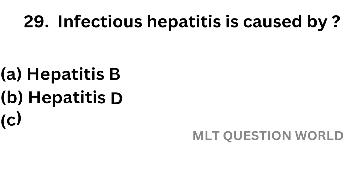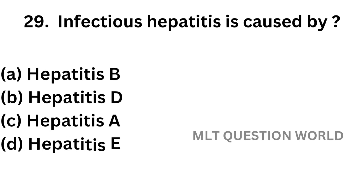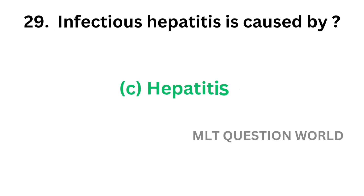Question number 29. Infectious hepatitis is caused by: option A, Hepatitis B; option B, Hepatitis D; option C, Hepatitis A; option D, Hepatitis E. The correct answer is option C, Hepatitis A. Infectious hepatitis is caused by Hepatitis A virus.